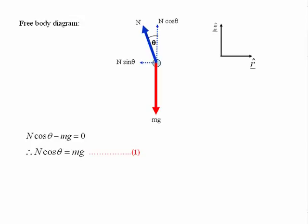Therefore, N cos theta is just equal to mg. In other words, the vertical component of the normal reaction force balances the weight.